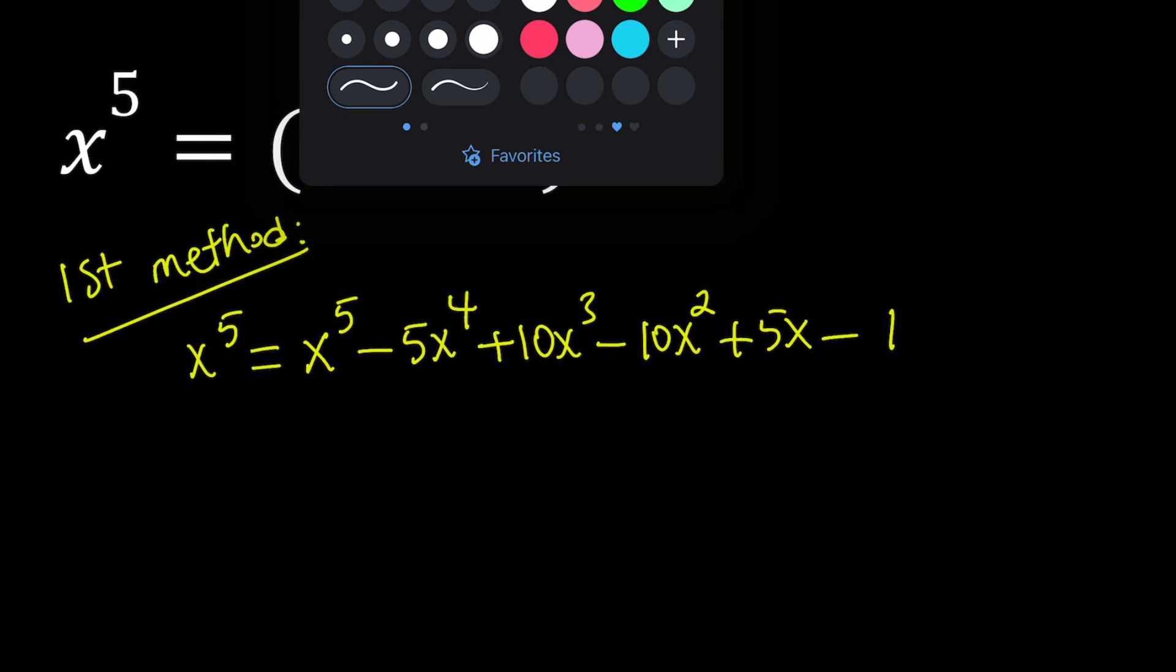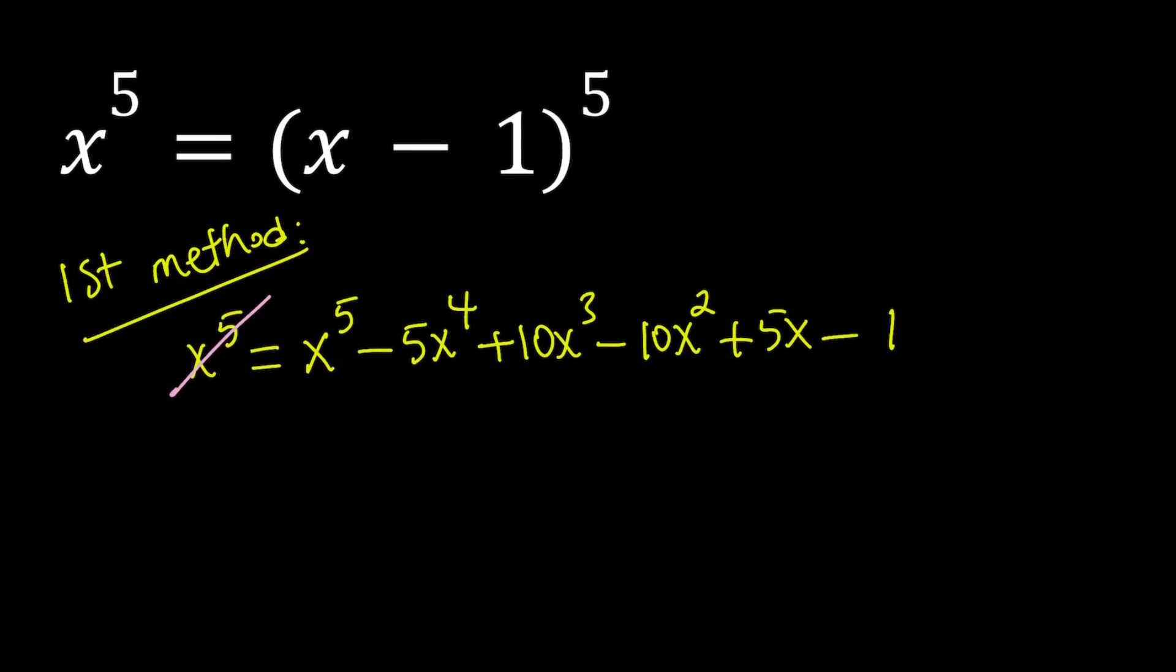Let's go ahead and simplify this. x to the 5th cancels out and that's the only thing that cancels out. So we're going to put everything on the left hand side where 5x to the 4th is positive. So it's going to look like this. 5x to the 4th minus 10x cubed plus 10x squared minus 5x plus 1 equals 0.